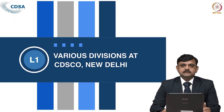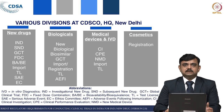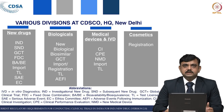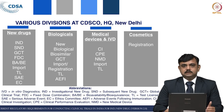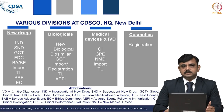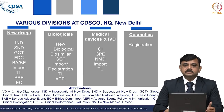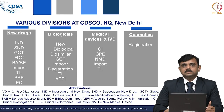Let us see the various divisions at CDSCO headquarters. There are mainly 4 divisions: the New Drug Division, Biologicals, Medical Device and IBD Divisions, and the Cosmetic Division. Under the New Drug Division there are subdivisions: IND Division for investigational new drugs, Subsequent New Drug Division, Global Clinical Trial Division, Fixed Dose Combination Division, Bioavailability and Bioequivalence Division, Import and Export of New Drugs, Test License Division, SAE Division, and Ethics Committee Division. Similarly, the Biologicals Division covers new biologicals, biosimilars, global clinical trials, import, registration, test license, and AEFI.